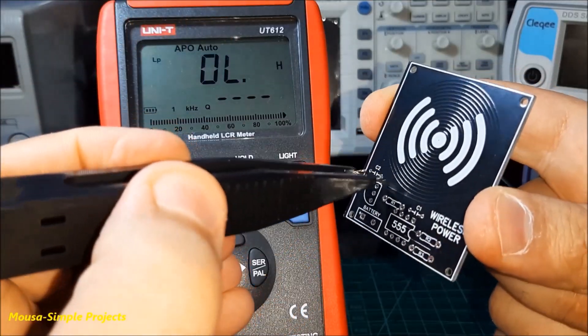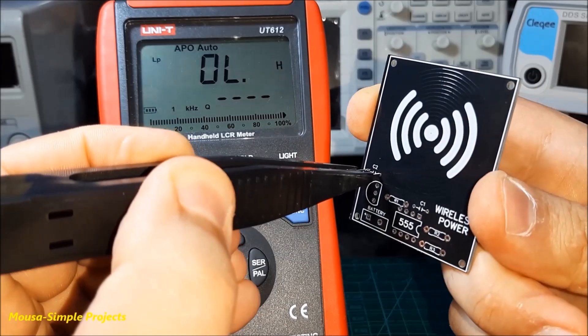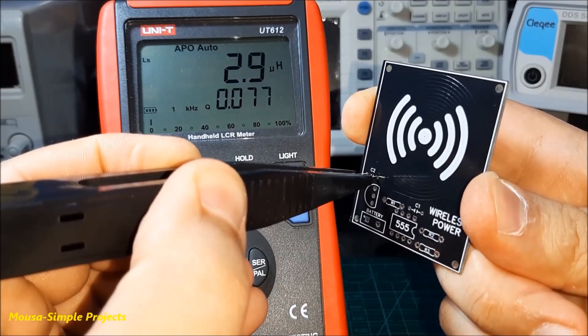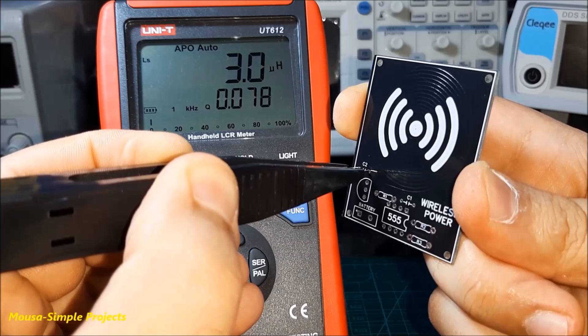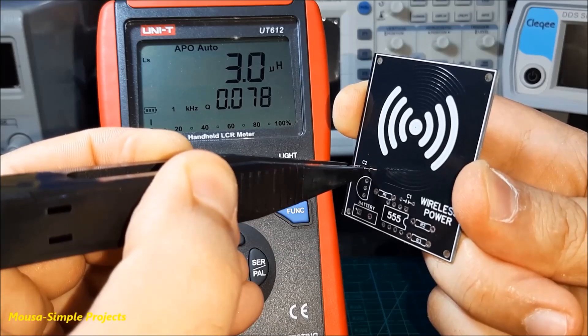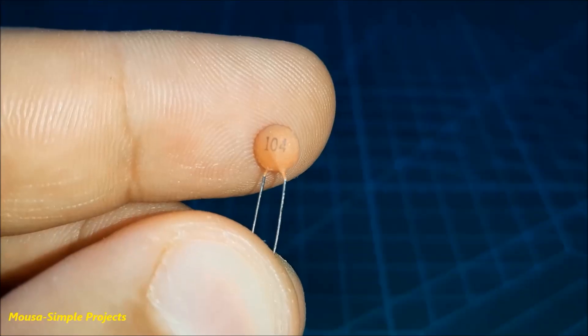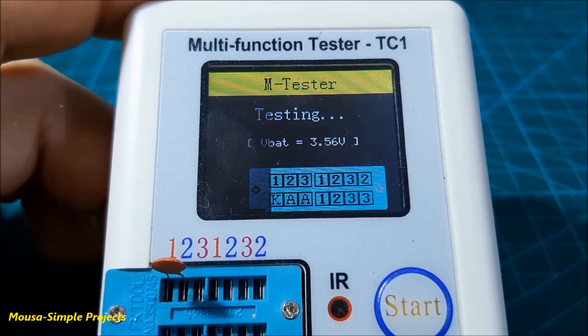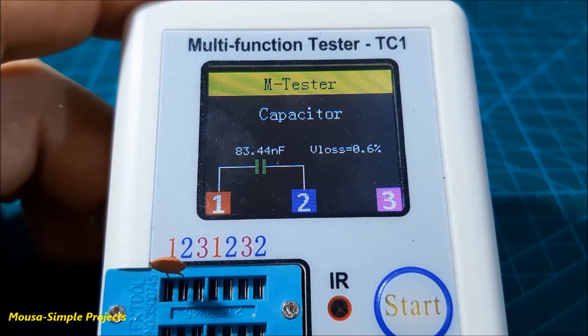Then I measured the inductance of the coil printed on the PCB using my LCR meter. As you can see, the inductance is equal to 3 µH, and the capacitor I would like to use is 100 nF. However, the real capacitance of this capacitor is only 83 nF.